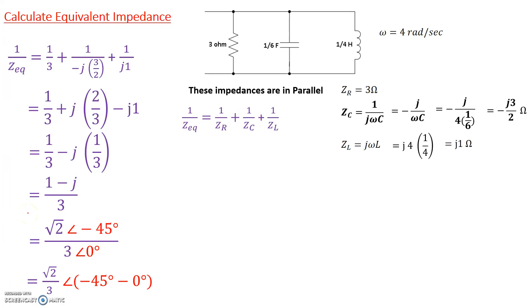That's 1 over the equivalent impedance. We're asked for the equivalent impedance, so Z_equivalent is this flipped over: 3 over square root of 2, angle positive 45 degrees. That's the phasor representation of that impedance. Here is that same impedance in Cartesian coordinates. You can leave them in the phasor domain as well.